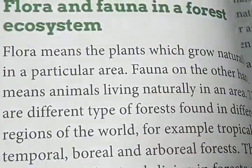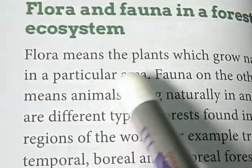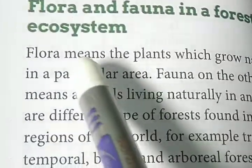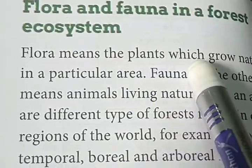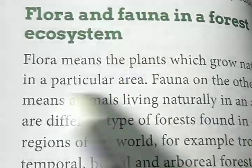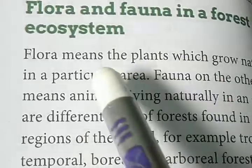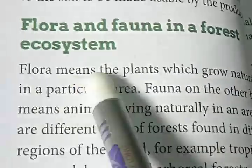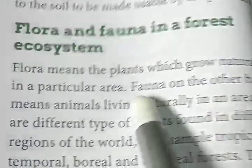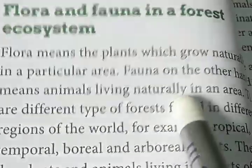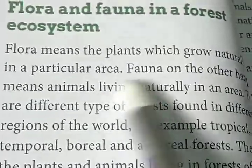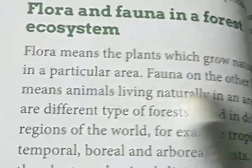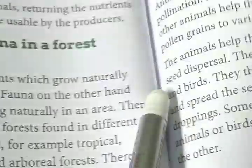Flora means the plants which grow naturally in a particular area — plants that grow automatically without us having to plant them. Fauna, on the other hand, means the animals living naturally in an area. In a particular habitat or community, the species that are able to live together are basically the fauna of that particular area.